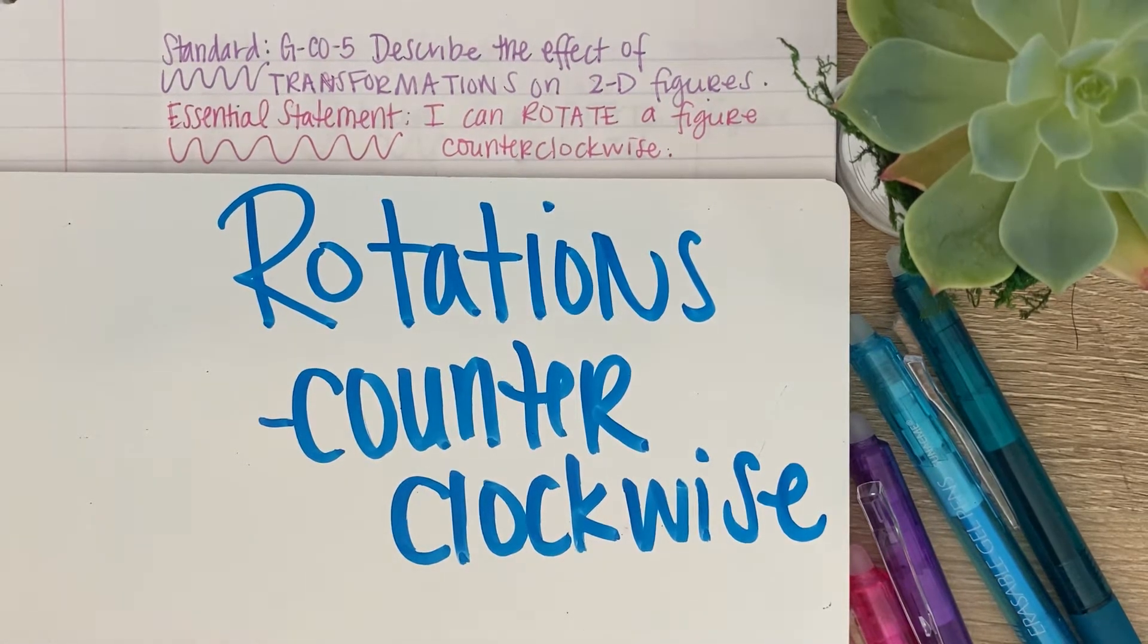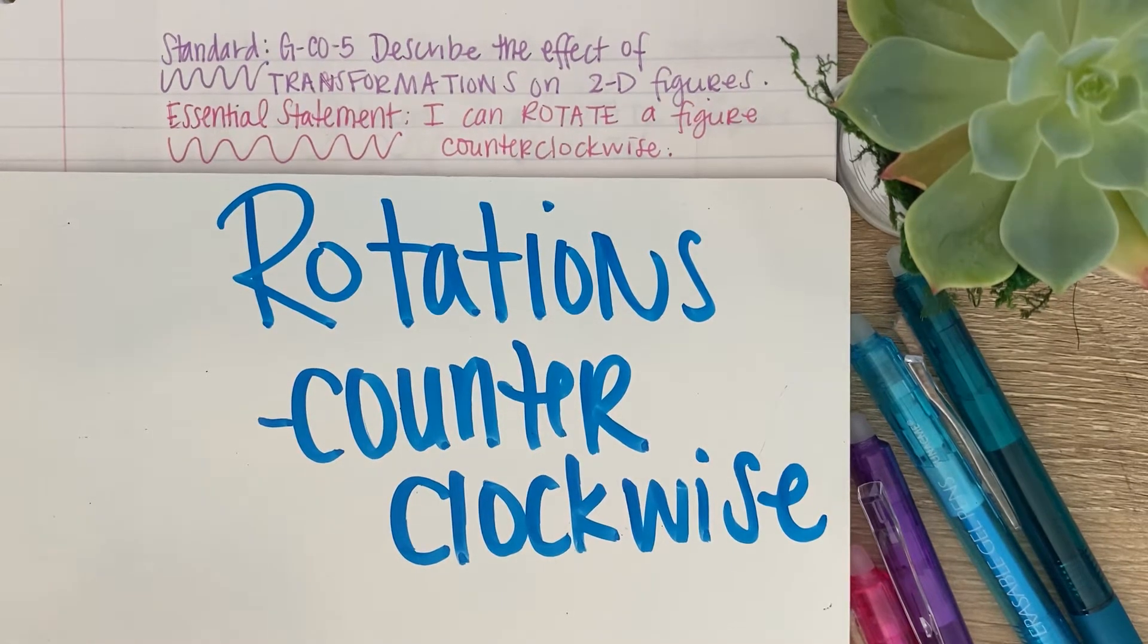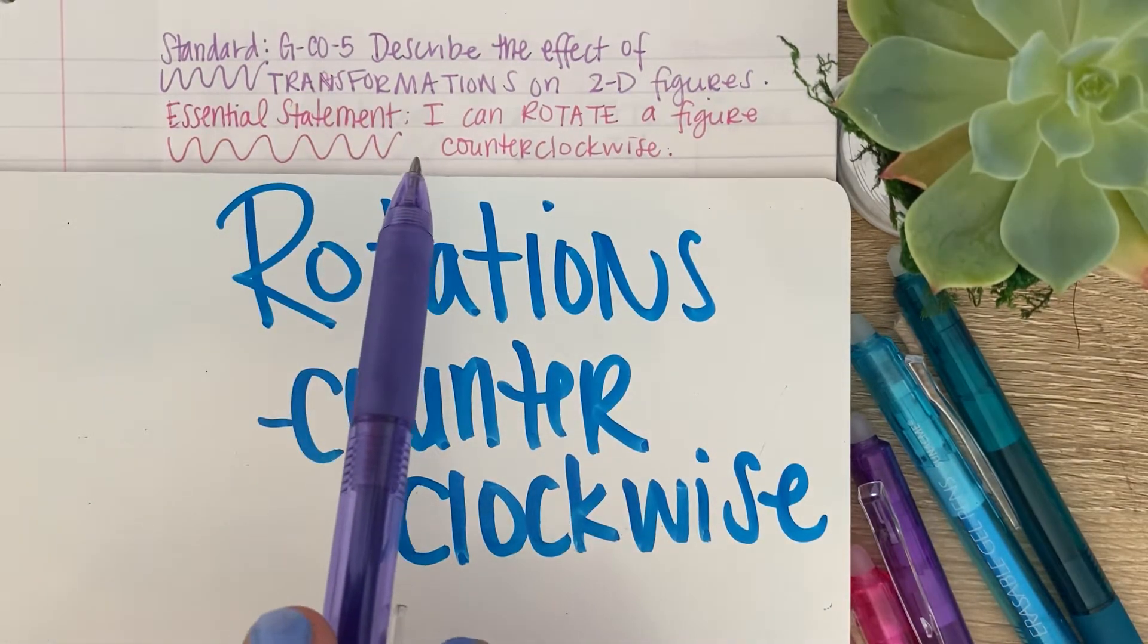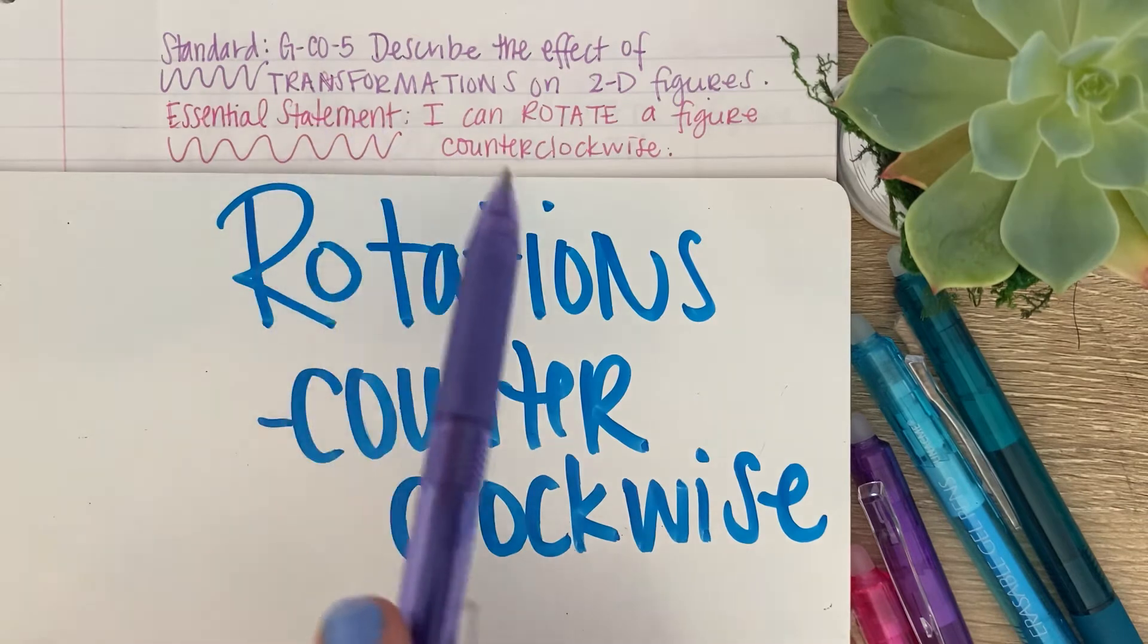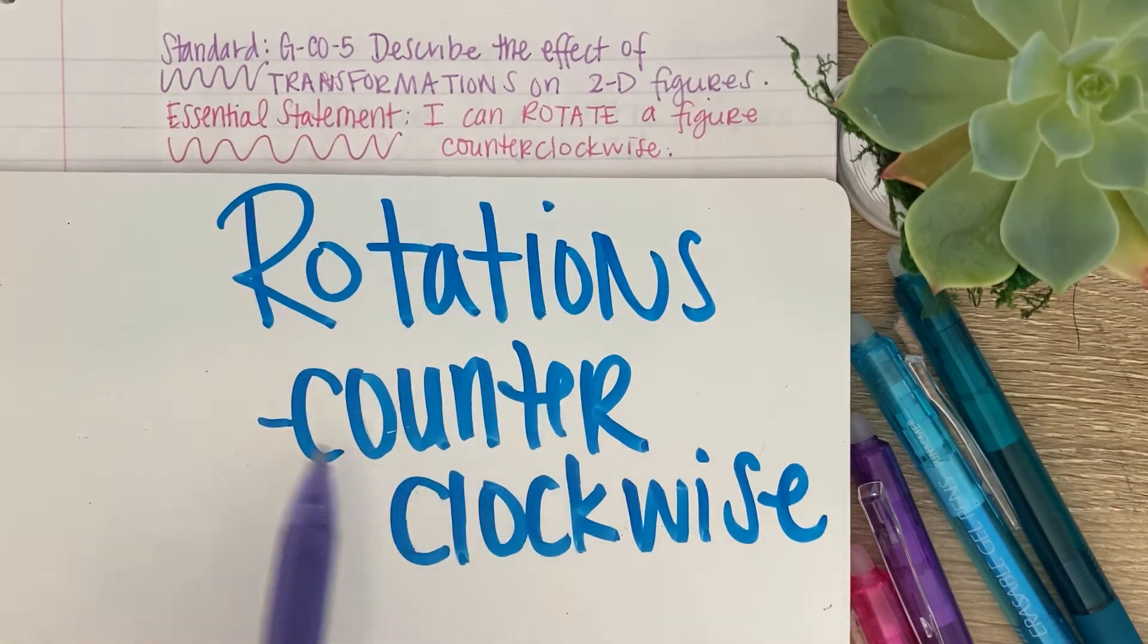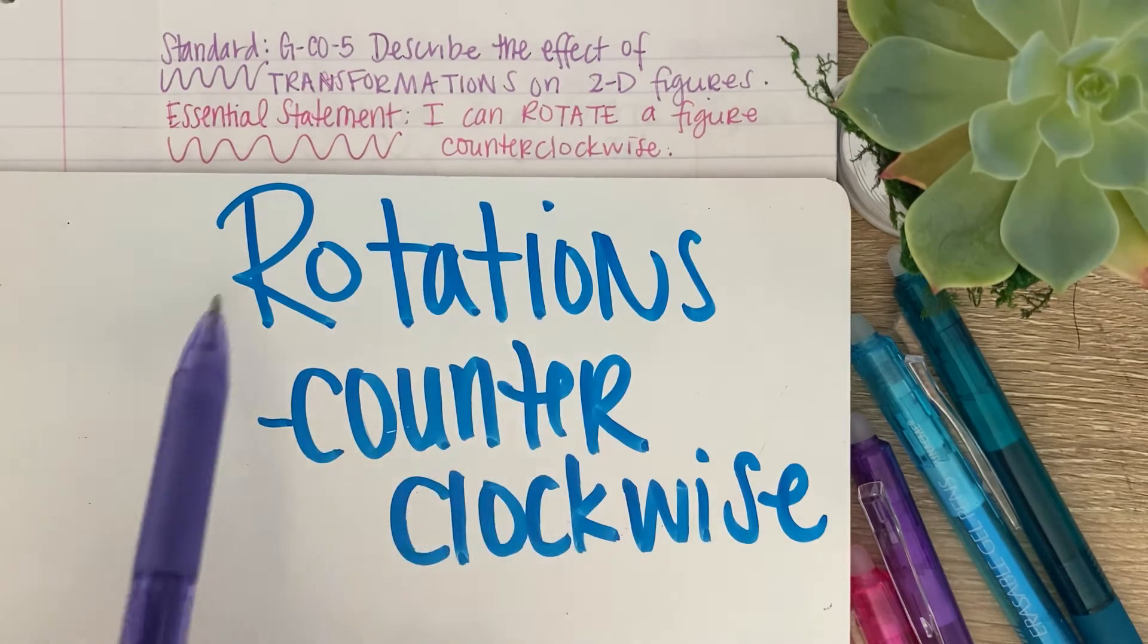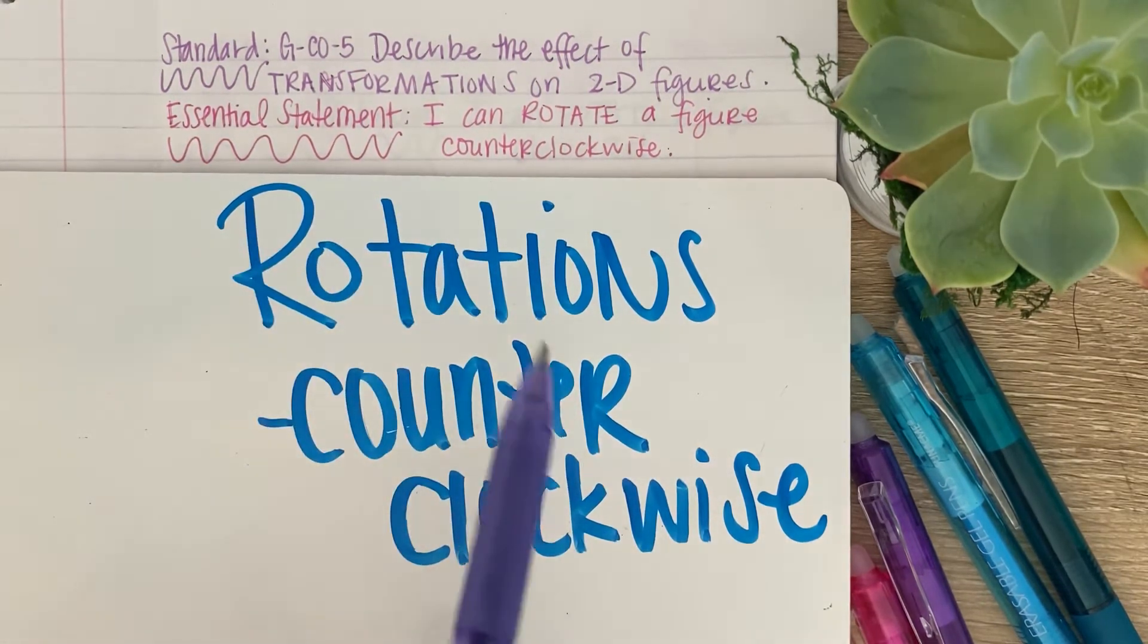Now, you need to have a basic concept of a clock in this situation. So if you take a look at my pen and I'm going in this motion, this is clockwise, because you start at 12, then you go to 3, 6, 9, back to 12. This is clockwise.